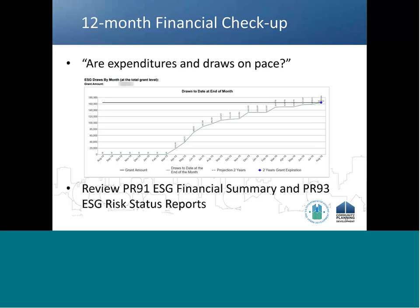As a best practice, recipients should conduct routine financial checkups, especially at the 12-month mark. Review current activities and ask: are expenditures and draws on pace to meet the 24-month expenditure deadline? The PR-91 ESG Financial Summary Report can assist with this analysis. The PR-91 identifies the recipient's expenditure deadline and also includes a line graph which tracks draws month-by-month over the 24-month grant period. The expenditure deadline date is 24 months from the date of HUD's signature on the grant agreement. If the date listed on the PR-91 report is incorrect, please submit a question to the IDIS Ask a Question to process a correction.